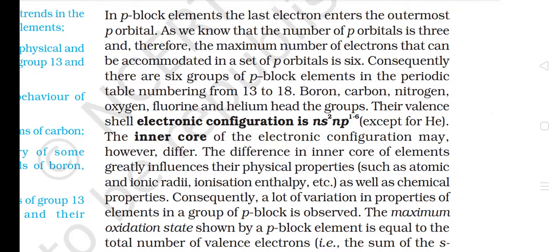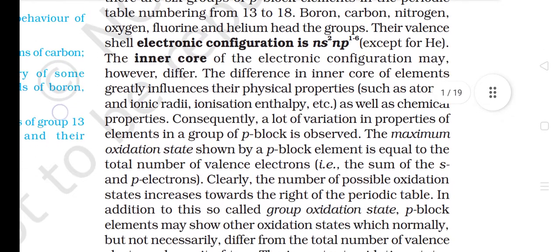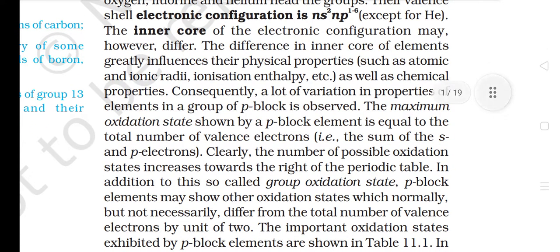Boron, Carbon, Nitrogen, Oxygen, Fluorine and Helium head the groups. Their valence shell electronic configuration is Ns2 Np1 to 6, except for Helium. The inner core of the electronic configuration may however differ. The difference in inner core of elements greatly influences their physical properties such as atomic and ionic radii, ionization enthalpy, etc., as well as chemical properties.